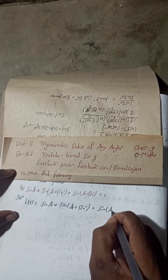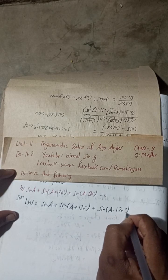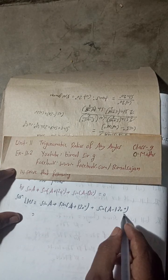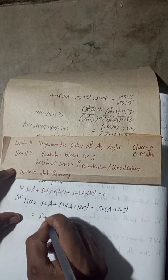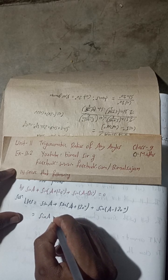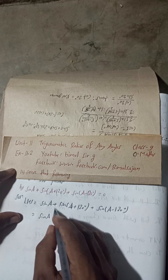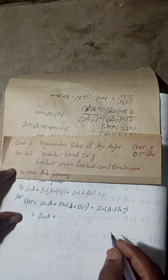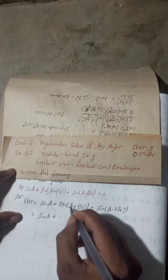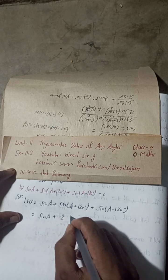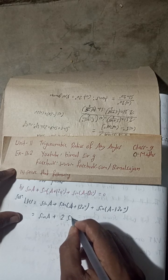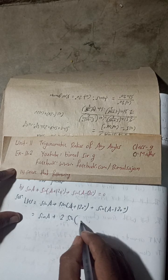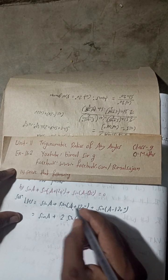Now we apply the sin C + sin D formula to the last two terms, keeping sin(A) as it is. The formula is: sin C + sin D = 2 sin((C + D)/2) cos((C − D)/2).